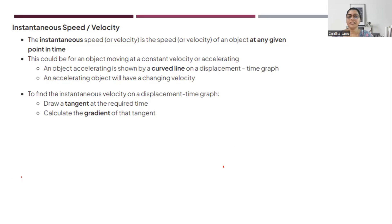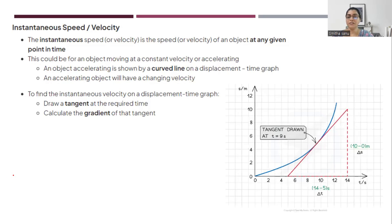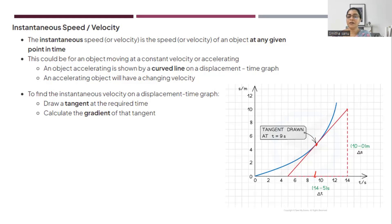How to find instantaneous speed in a given situation? For example, if the exam asks you to find instantaneous speed at the 9th second, look for the 9th second in the graph, which is between 8 and 10. Plot a tangent with a scale, and the slope of the tangent gives you the instantaneous speed. Change in y-coordinates (10 minus 0) over change in x (14 minus 5) gives you velocity — this is called instantaneous velocity at a given time.